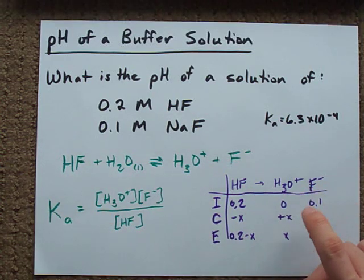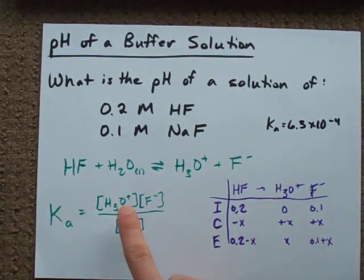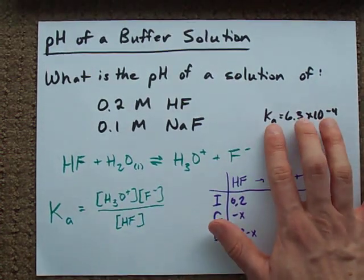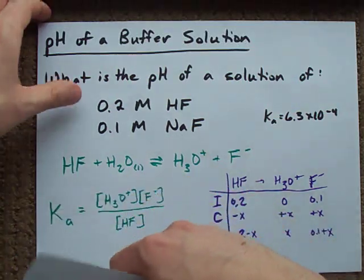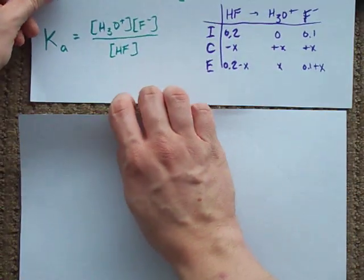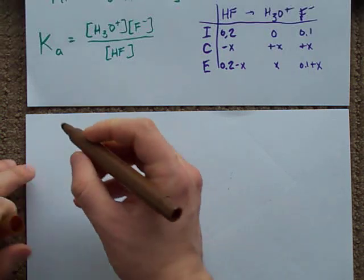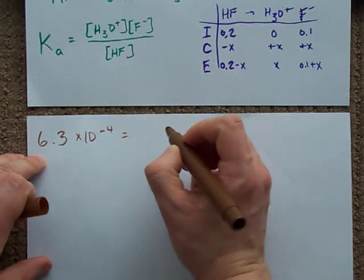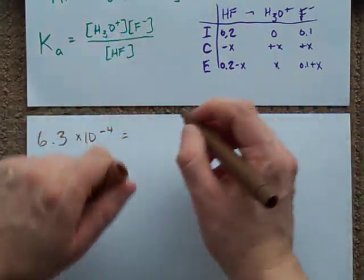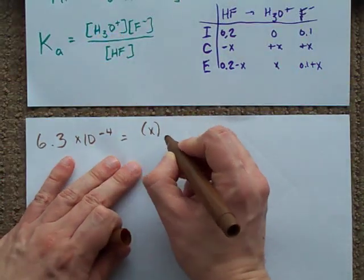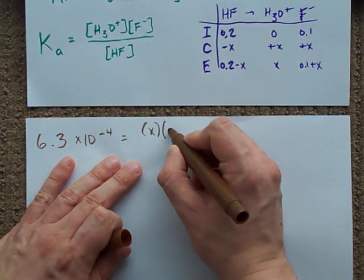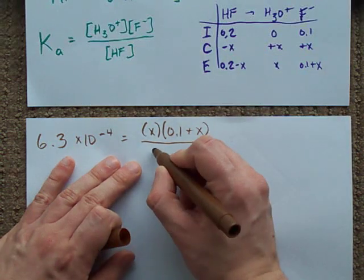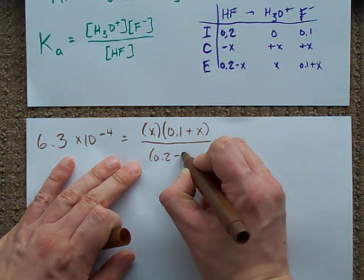I'm gonna take these equilibrium concentrations and plug them into this equilibrium expression. At the same time, I'm gonna use the Ka I was given. What we end up with is 6.3 times 10 to the negative 4 equals concentration of H3O plus, which was X, times concentration of F minus, 0.1 plus X, all divided by concentration of HF, 0.2 minus X.